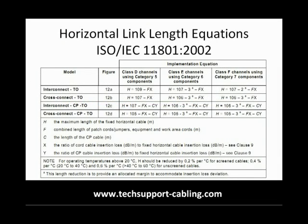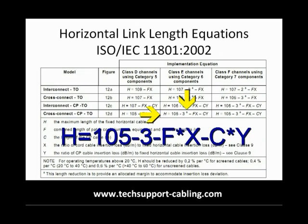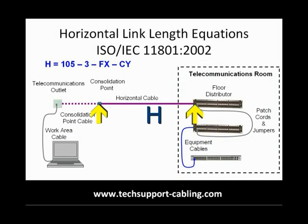Following down and across the appropriate column and row gives us the formula: H equals 105 minus 3, minus F times X, minus C times Y — where H is the longest permissible length of the horizontal cable.